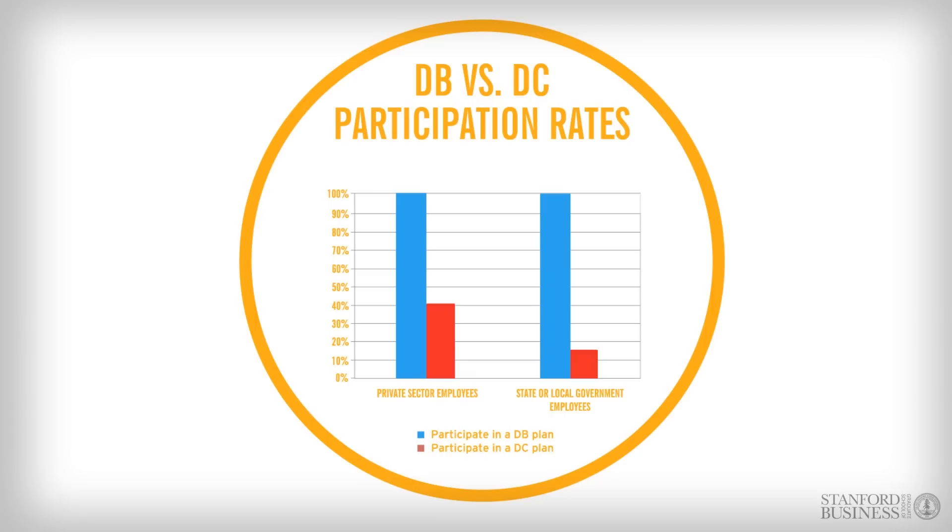On the other hand, if all private sector workers with access to DC plans participated in those plans, there would be DC participation rates of closer to 60%, as opposed to 40%.